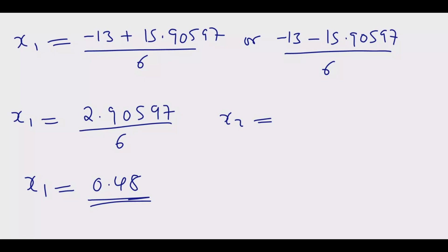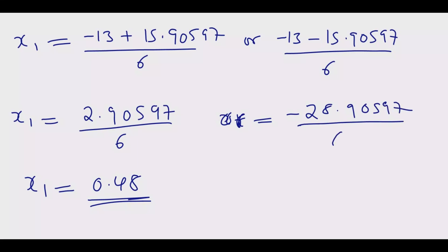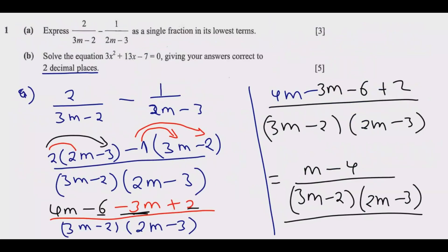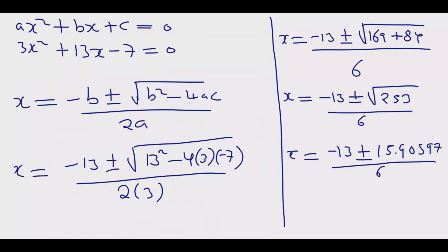Then x2: x equals negative 13 minus 15.90597, over 6, which gives negative 28.90597 over 6, which equals negative 4.82. So just pay particular attention to the signs for the first question. For the second question — quadratic equations, which always comes up — just identify a, b, and c easily and this should be a giveaway question.